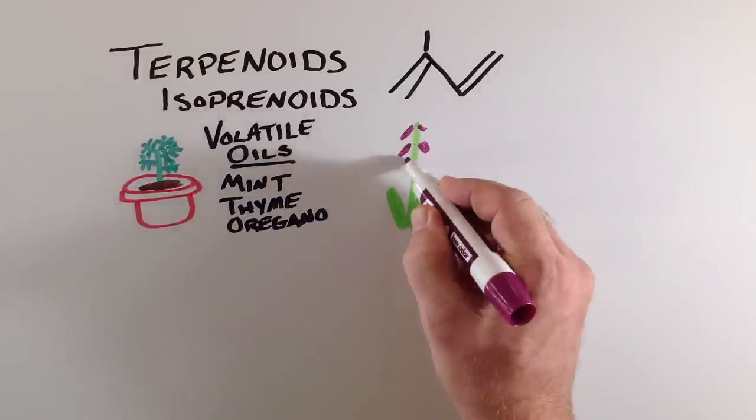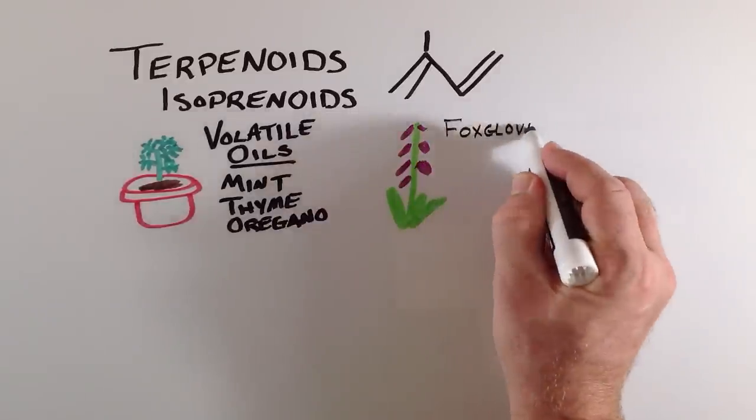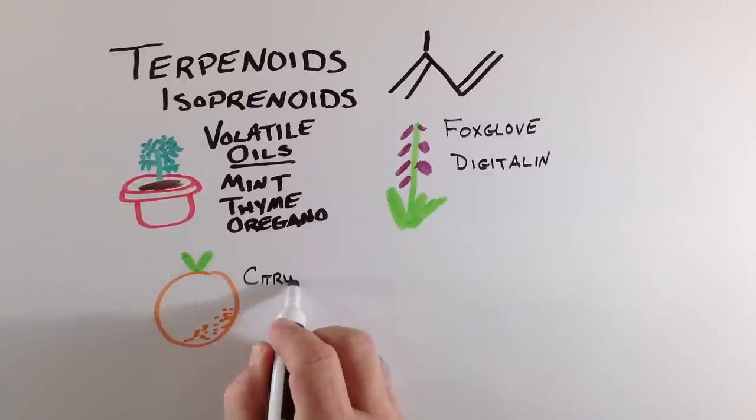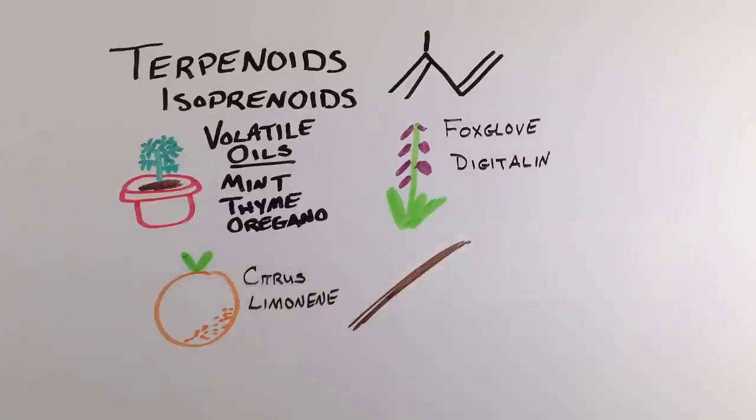Another example of a terpenoid is digitalin. It is produced by the common garden plant Foxglove. It and similar chemicals can have an effect on an herbivore's cardiac system. Limonene is an aromatic terpenoid found in the rinds of many different citrus fruits. Pine trees produce resins that are a rich syrup full of terpenoids and different modifications of these chemicals.